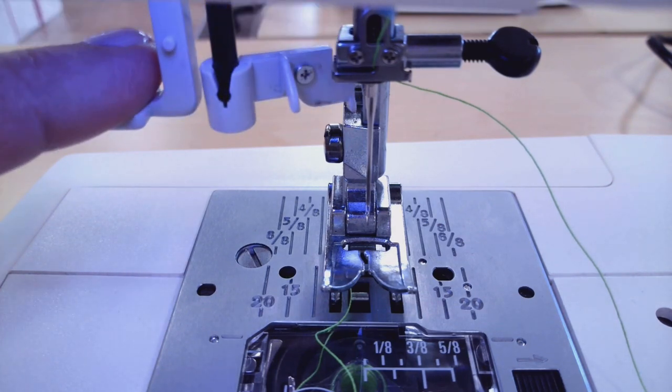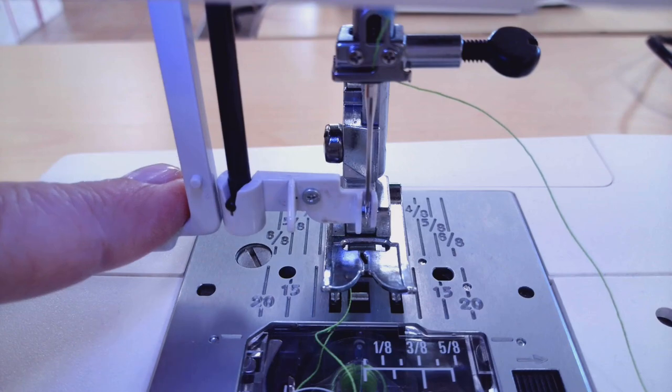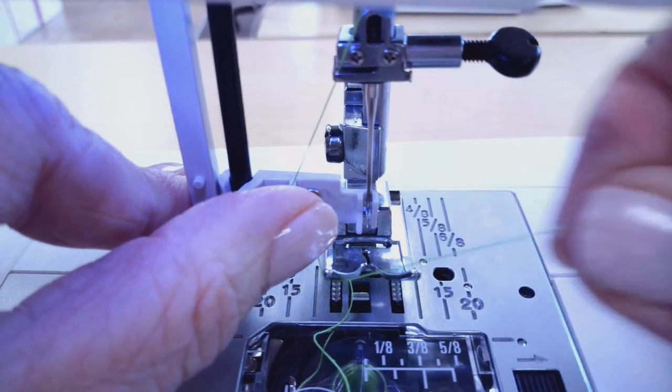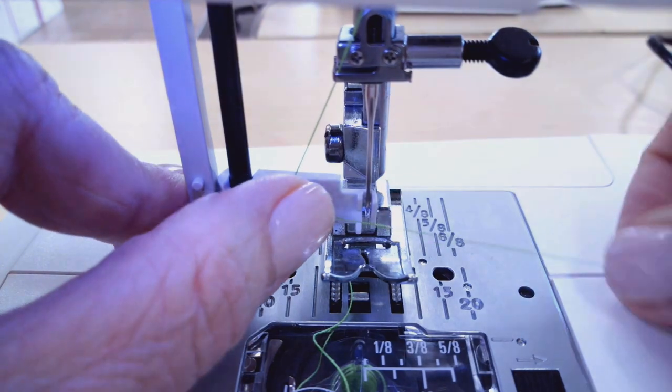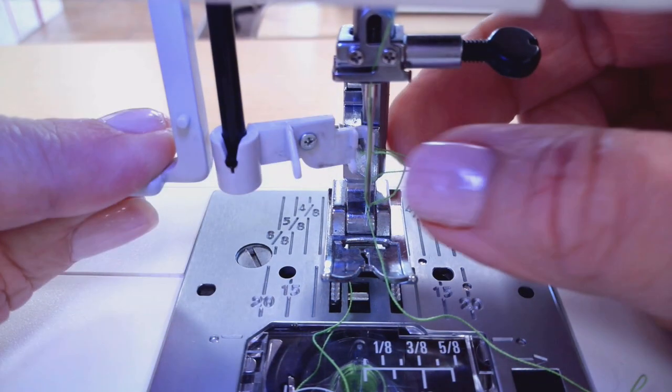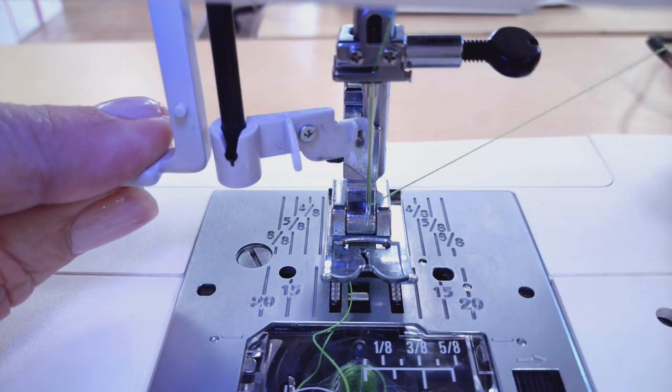Basically what we have here is we pull down our needle threader and we bring our thread across and it's going to pull through a loop for us and we can pull that loop and our needle is threaded.